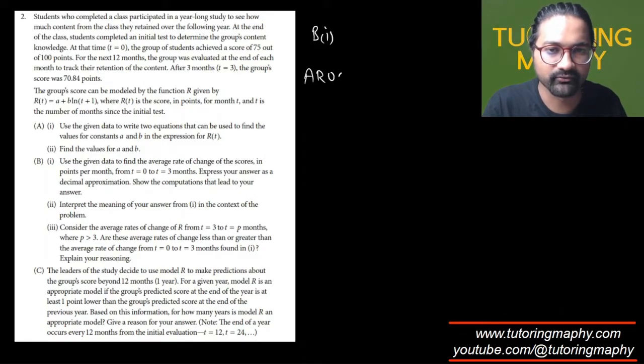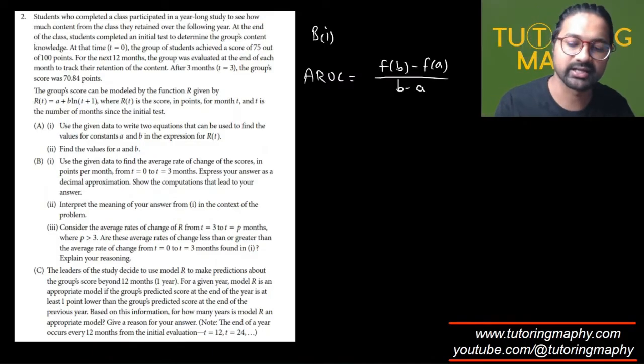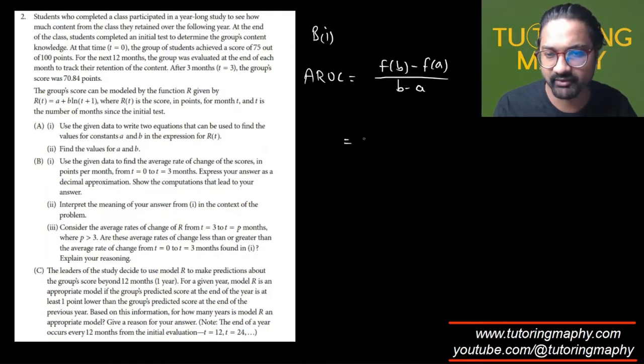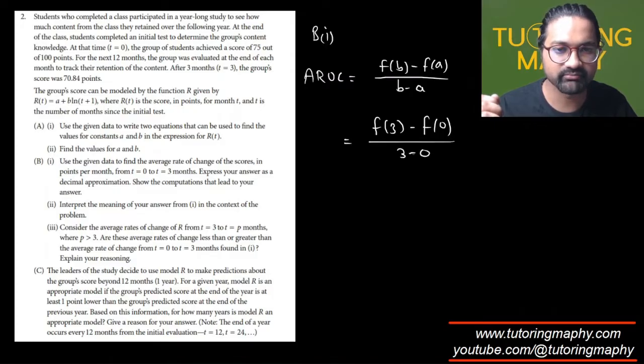We just have to remember what is the formula for the average rate of change. The average rate of change is given by f(b) minus f(a) over b minus a, where a and b are the points about which you are finding that change. We are finding from 0 to 3. So that's f(3) minus f(0) over 3 minus 0.